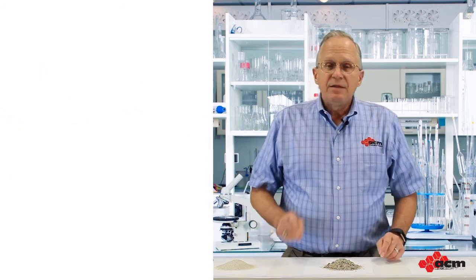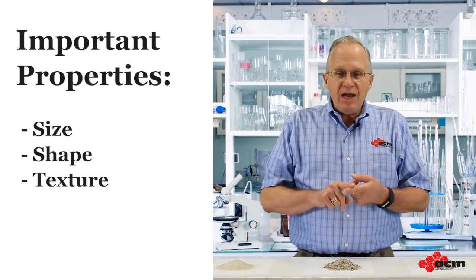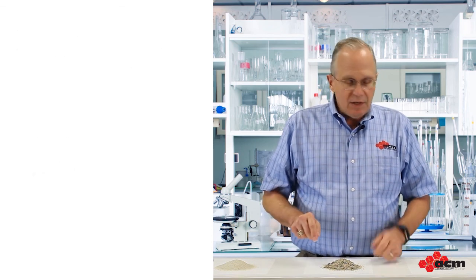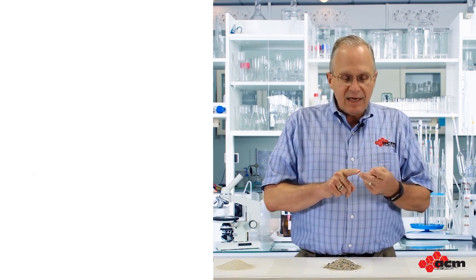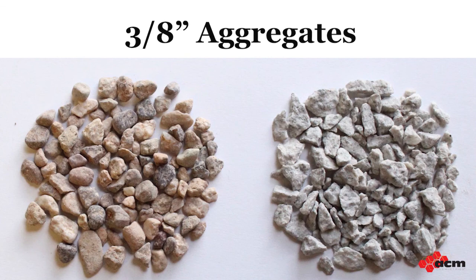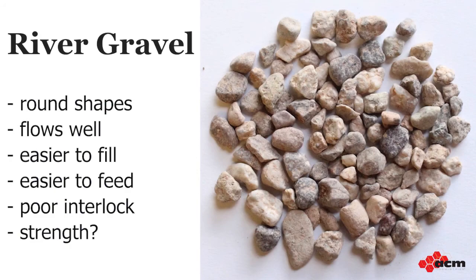Besides size, the next most important property is the shape and texture of the aggregates. Here we have two different categories: natural aggregates and manufactured aggregates. Looking at natural gravel — often dredged from a riverbed — notice the round shapes. That's good for concrete flow, and makes the mix easier to feed and fill molds properly. On the other hand, because the surfaces are so smooth, the particles don't interlock together well, and the cement has a harder time binding to the surfaces. This can lower compressive strength.